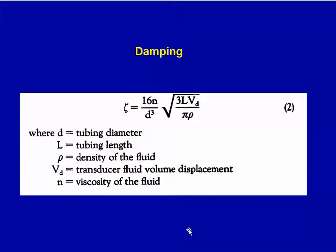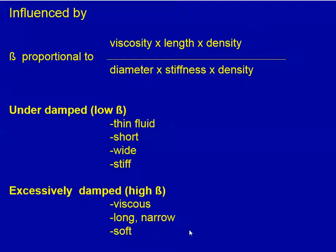These are the factors that influence damping. Basically, the damping coefficient is proportional to viscosity, length, and density over diameter, stiffness, and density. Things that cause the system to be under-damped include thin fluid, short tubing, wide tubing, and stiff tubing. Factors that cause excessive damping include viscous fluid, long narrow tubing, and soft tubing.